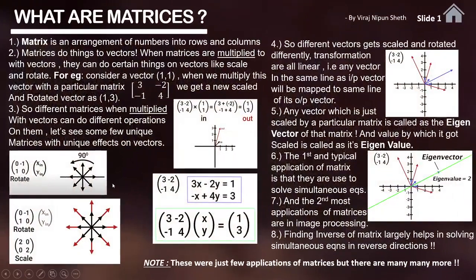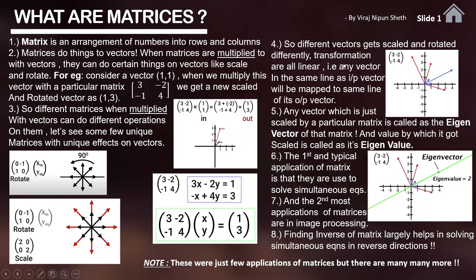So what are matrices? They are more than just a group of numbers arranged in rows and columns. They can do things on vectors — by things I mean scaling and rotating operations on them. Let's say we have a vector [1,1] and a matrix [3, -2, -1, 4]. When this matrix is multiplied with this vector, it can either scale, rotate, or do both operations on the vector. After multiplying this matrix with vector [1,1], we got a scaled and rotated version which is [1,3]. Similarly, different matrices can have different effects on vectors. This process is obviously a linear process.